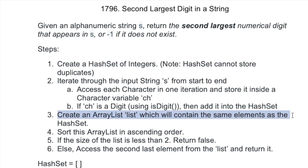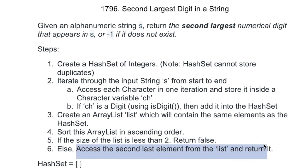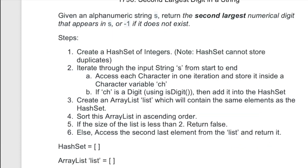Since a hash set cannot be sorted, we create an ArrayList containing the same elements as the hash set, then sort that list in ascending order. The second largest number is at the second index position from the right. Before accessing and returning it, we check if the size of the list is less than two. If it is less than two, there is no second largest number — only one lonely element — so we return minus one. Otherwise, we access and return the second largest number.